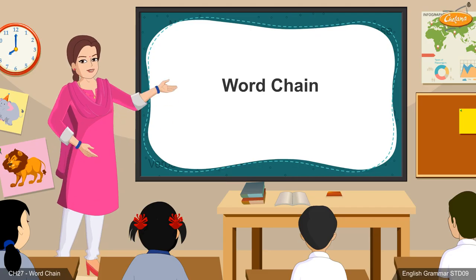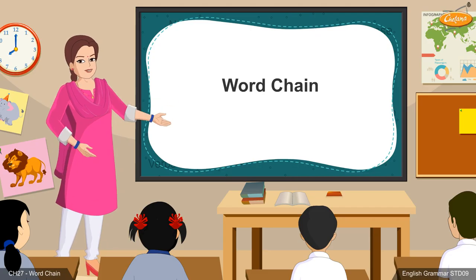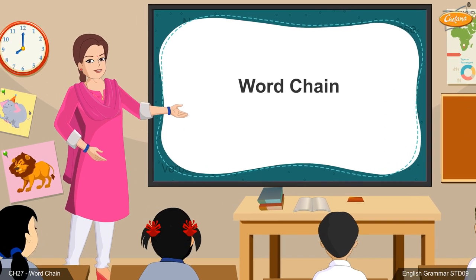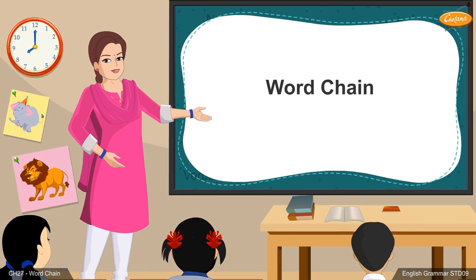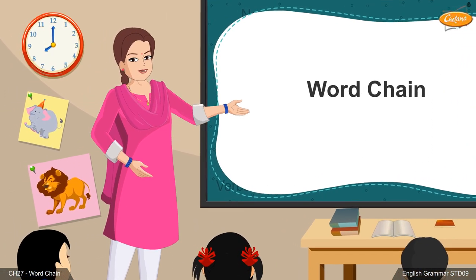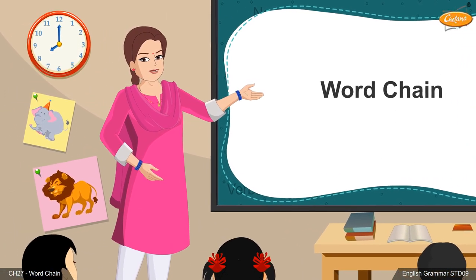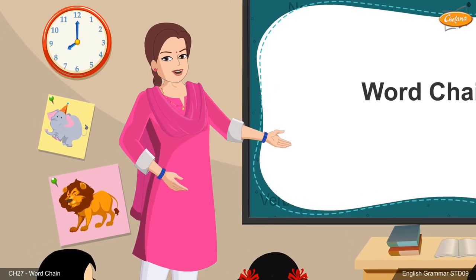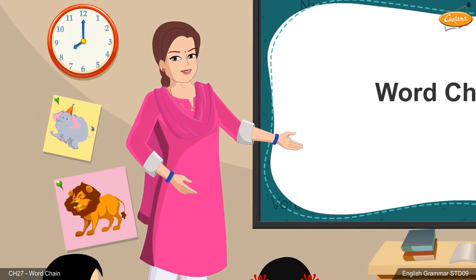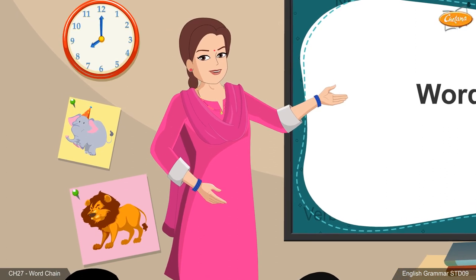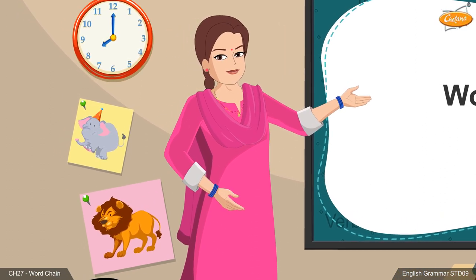Have you played Antakshari with your friends in your free time? How do we play it? A person coins a word, then the opposite team member sings a song, and when he stops, the last alphabet of the song is used to start the new song. In the same way, we have a grammatical unit called a word chain.